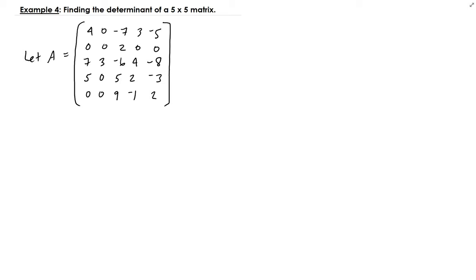In this lesson we're going to find the determinant of a five by five matrix using a combination of techniques, but the main thing is that we're going to use cofactor expansion. You want to use the row or column with the most zeros, so we can see at a glance that we can use the second row here.